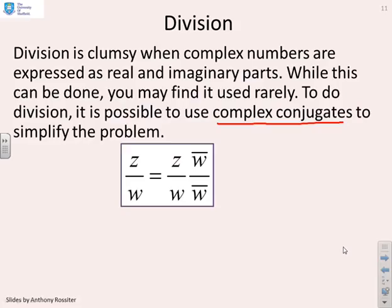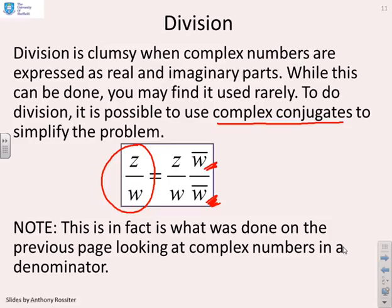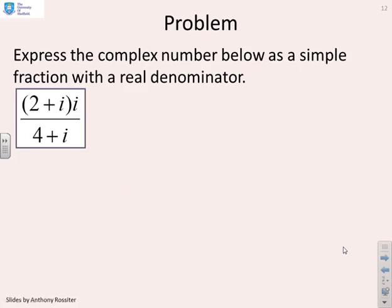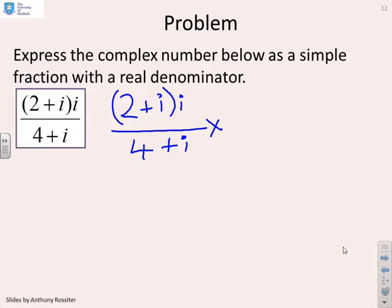In general, for (A + iB)/(C + iD), multiply top and bottom by the conjugate (C − iD). The denominator becomes C² + D², which is positive real. The numerator becomes AC + BD + i(BC − AD), and this is the general result for complex division. This effectively replaces division with multiplication.